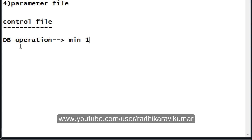For our database operation, a minimum of one control file is required. As I mentioned in the previous tutorial, for redo files, two redo log files are required. So to summarize: for redo files, two are required; for the control file, a minimum of one is sufficient for database operation.